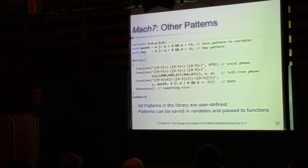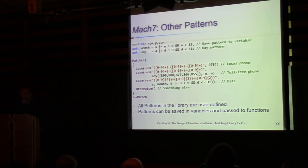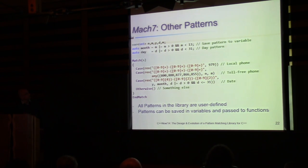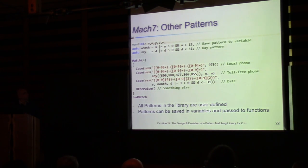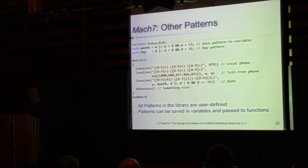You can introduce other patterns too. There is a regular expression class in the C++ standard — it took about 20 to 30 minutes to turn it into a regular expression pattern that can bind sub-parts matching groups. This essentially recognizes any toll-free phone number. You can also save patterns into variables: the 'month' pattern can be defined once as a variable that must be greater than 0 and less than 13, then reused in several places. The main point: all patterns in this library are user-definable, and you can save them as variables and pass them around in functions.